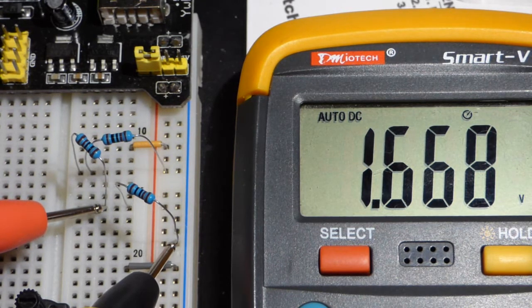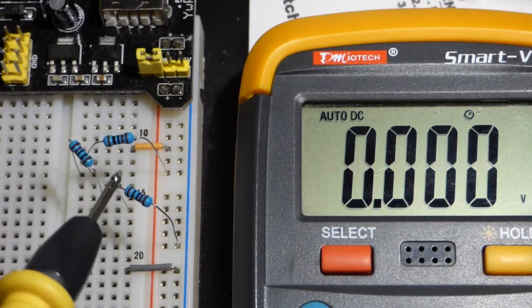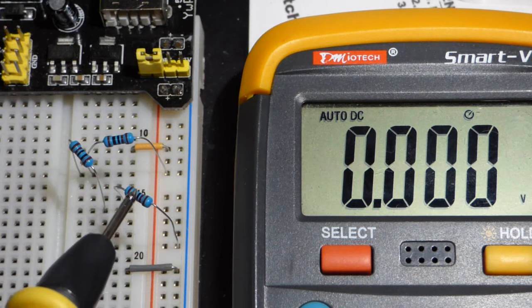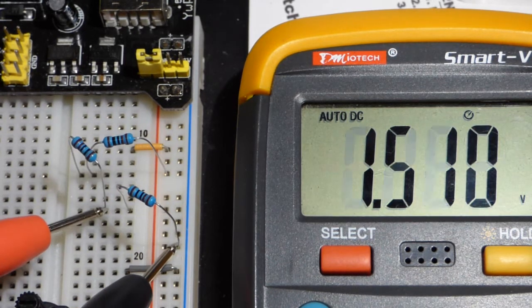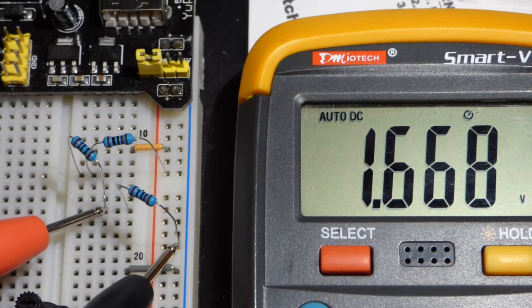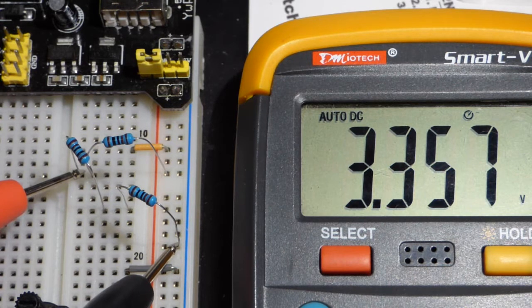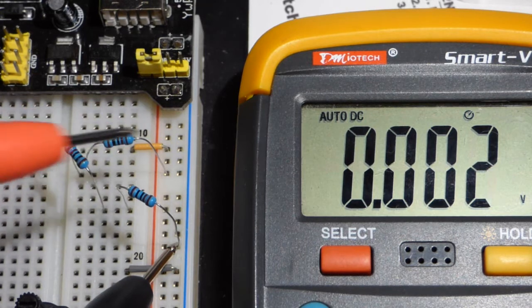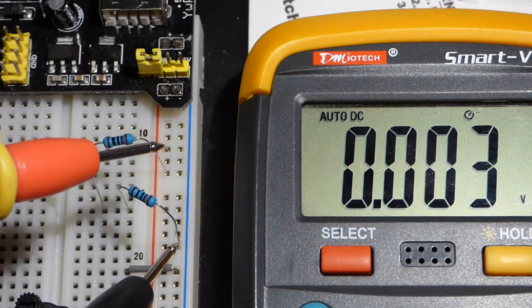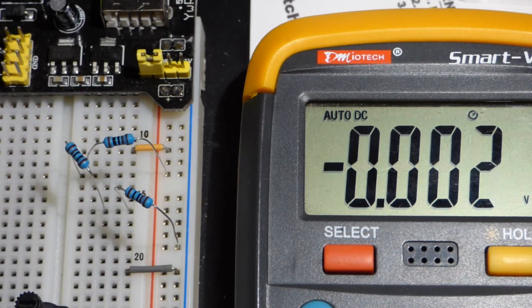There you can see we have one third, and this is how the 555 timer measures voltages at a couple of its pins. Pin number two is looking for lower than one third of the power supply voltage. Pin number six is looking for higher than two thirds of the power supply voltage. There's three resistive areas inside the integrated circuit that go from positive to negative and so it taps into that.